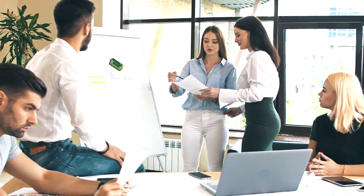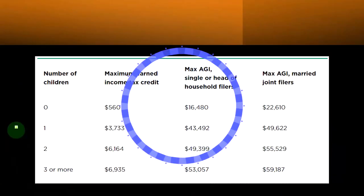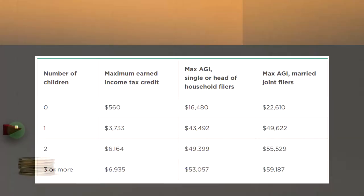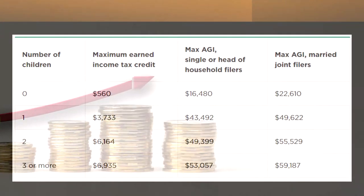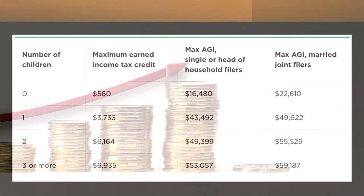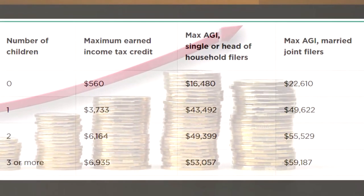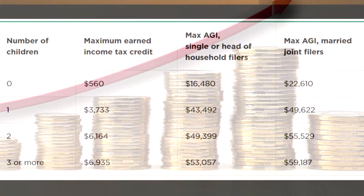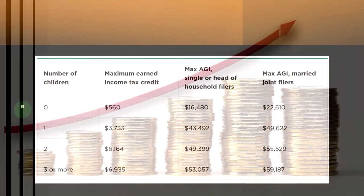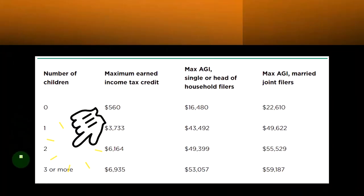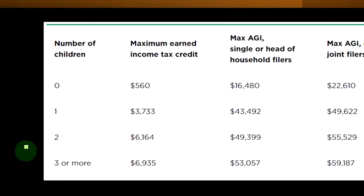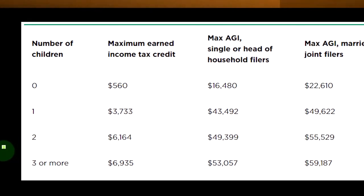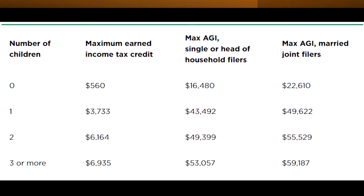Regarding the earned income credit, most economists really like it because it tries to incentivize work. The credit actually goes up as you have earned income up to a certain threshold, and then it goes back down. Think of it as a curve — it rises as income increases, hits a maximum, and then declines. There are different curves depending on how many children you have.